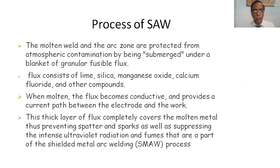When molten, the flux becomes conductive and provides a current path between the electrode and the work. This thick layer of flux completely covers the molten metal, thus preventing spatter and sparks as well as suppressing the intensity of ultraviolet radiation and fumes that are a part of the shielded metal arc welding. This is the process of SMAW process.